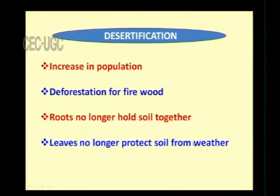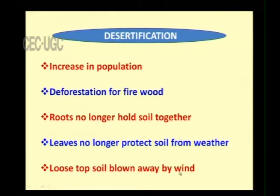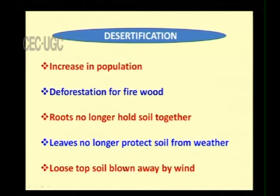When population increases, it leads to deforestation, which leads to loss of roots, so there is no binding force and no leaves to protect the soil. All these factors combined cause the loose top soil to be blown away by wind, and the land gradually becomes a desert because of human beings.